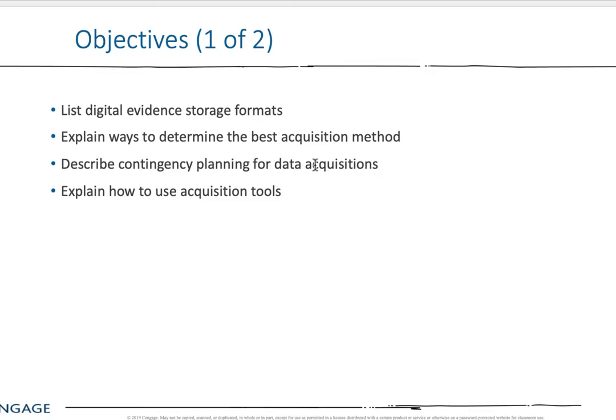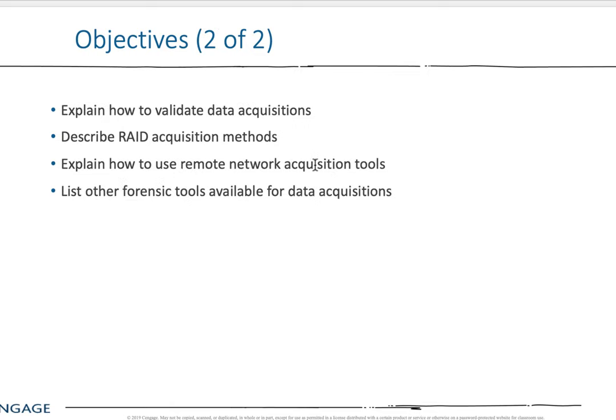Getting the digital evidence is a lot of fun — sculpting it, carving out what you need — but the planning process is critically important. Also, explain how to validate data acquisitions. Using RAID: there are several different RAID methods identified in the chapter text, so go ahead and read through that and get familiar with those.